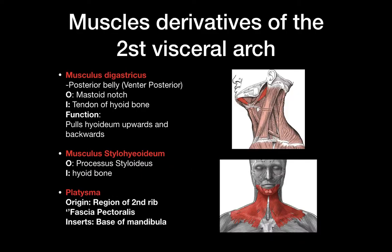Moving to the second visceral arch, you can see the posterior belly of the digastricus here. It sits on the mastoid notch, or incisura mastoidea, and inserts at the tendon of the hyoid bone. The function of this belly is to pull the hyoid bone upwards and backwards. Then you have musculus stylohyoideus, which sits on the stylohyoid process of the temporal bone and inserts at the hyoid bone.